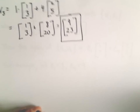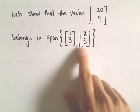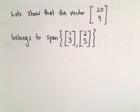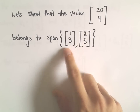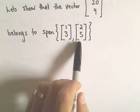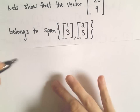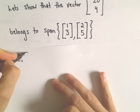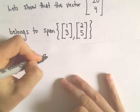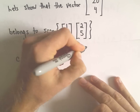A very common thing you'll want to do is take a specific vector and show it belongs to the span. In this case, I'm taking the vector [20, 4] and showing it belongs to the span of those two original vectors [1, 3] and [2, 5]. Can I figure out a linear combination of these two vectors that will produce that new vector? That's the question we're trying to address.